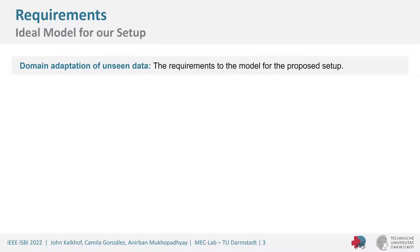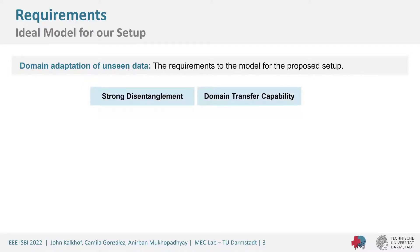We start by setting a few requirements for our ideal model. The first is strong disentanglement — a clear separation of content from domain in the image. Next is domain transfer capability, to transform from the unknown domain into the training domain. And lastly, high-quality segmentation, which is the final result we want to achieve. We looked at other state-of-the-art methods to see how well they meet these requirements.